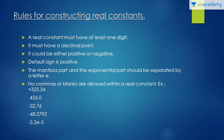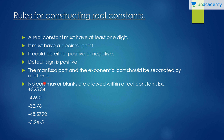Let's move ahead and study the rules for constructing real constants — real means floating point constant. A real constant must have at least one digit and must have a decimal point. It can be either positive or negative and the default sign is positive. The mantissa part and exponential part should be separated by the letter 'e'. No commas or blanks are allowed within a real constant. Real constants are simply floating point values which use a decimal point.